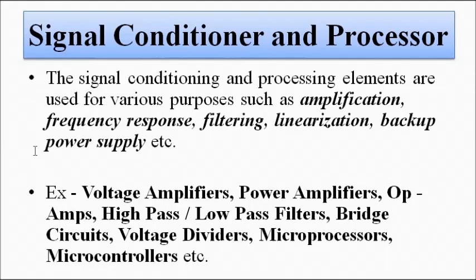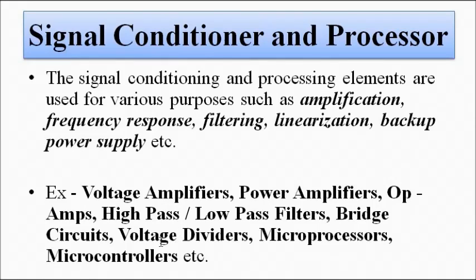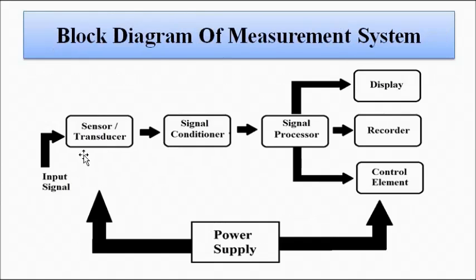Examples of signal conditioners and processors include voltage amplifiers, power amplifiers, operational amplifiers, various types of filters — high-pass, low-pass, band-pass, band-stop — bridge circuits, voltage divider circuits, microprocessors, and microcontrollers. These are all signal conditioning and processing elements.